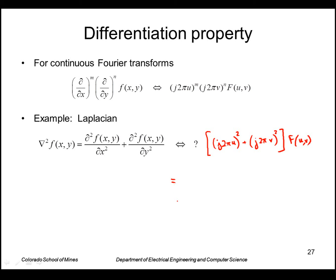So j2 pi u squared plus j2 pi v squared, and then f of u v. j squared is minus 1, so this comes out to be minus 2 pi squared u squared plus v squared f of u v. So h is a filter, it's the transform of a filter.